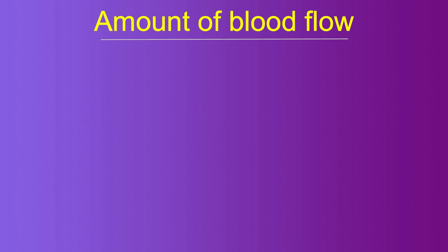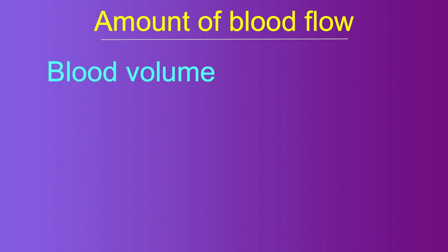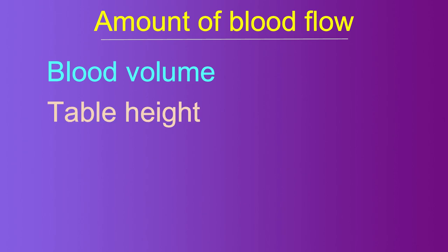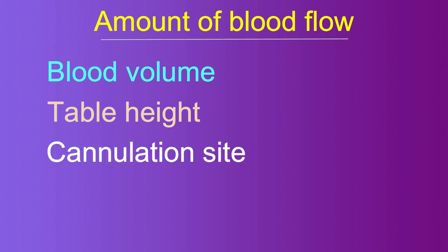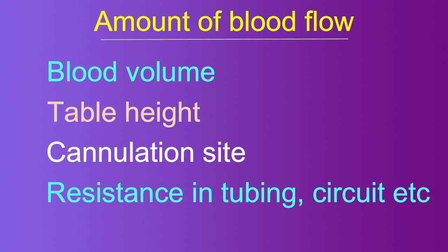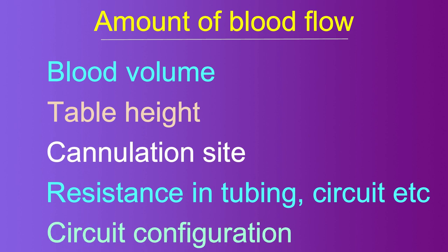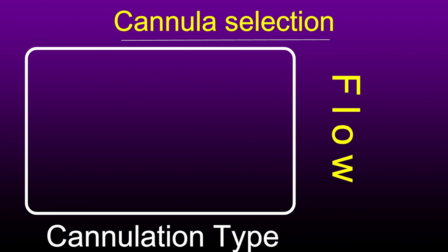How much blood flows into the reservoir depends on the blood volume of the patient at the time of going on bypass, the patient height relative to the upper level of blood in the reservoir, whether it is central or peripheral cannulation, whether it is single or bicaval cannulation, the resistance offered by the tubing and circuit, and the configuration — whether it is bicaval, a Y-on-Y, or a single connection as in the case of a two-stage venous cannula. Cannula selection and the type of cannulation both affect flow.